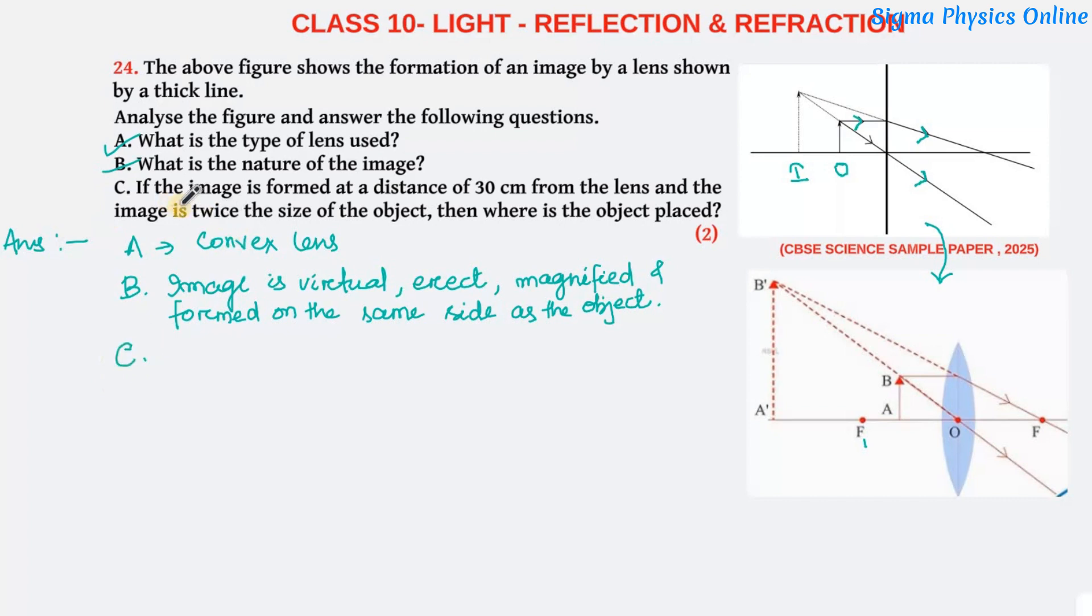Now let's solve the third bit. If the image formed is at a distance of 30 centimeter from the lens, the image distance V is given as minus 30 centimeter. V is minus because the image is formed in front of the lens, and to measure the image distance we have to go towards the left from the optical center, against the direction of light which is from left to right. So the image distance is negative 30.